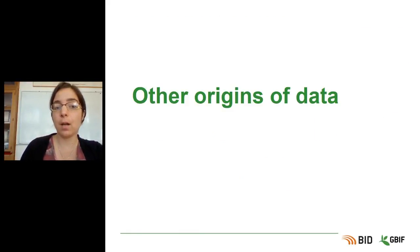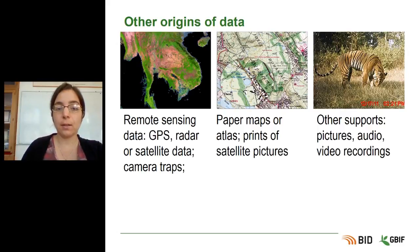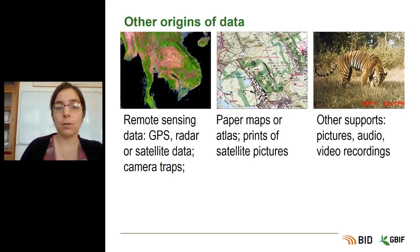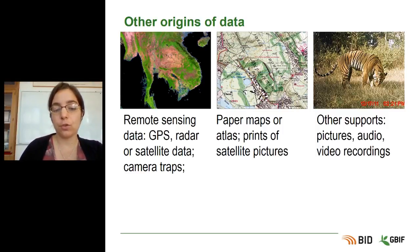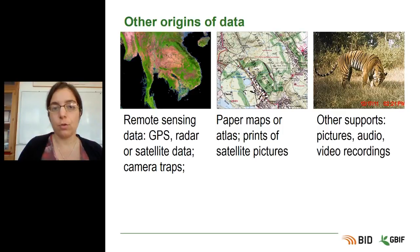There are also data from different other origins that are not literature, specimens, or taxonomic checklists. These include remote sensing data taken by GPS, radar, or satellite; pictures or audio recordings from camera traps; paper maps or atlases; prints of satellite pictures; and other supports such as pictures, audio, and video recordings, whether from camera traps or taken directly by you on the field with a digital camera.